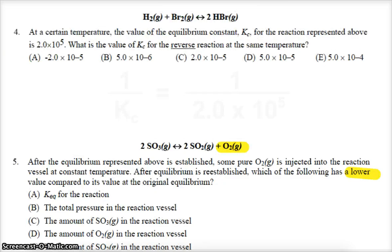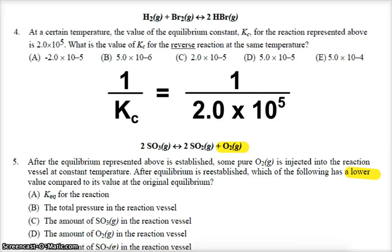Question 4 is asking us, here we have some hydrogen and bromine making some hydrogen bromide. At a certain temperature, our Kc for this reaction is 2.0 times 10 to the 5th. What's the value of Kc for the reverse? Remember, that's just our reciprocal. When we put 1 over 2 times 10 to the 5th, hopefully on your calculator, you get letter B for your answer.